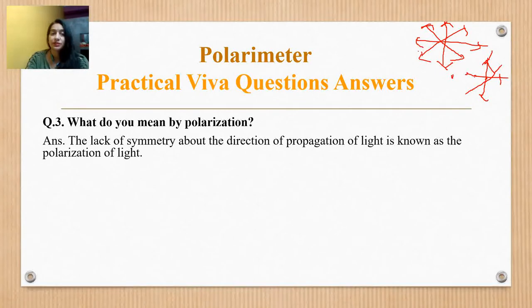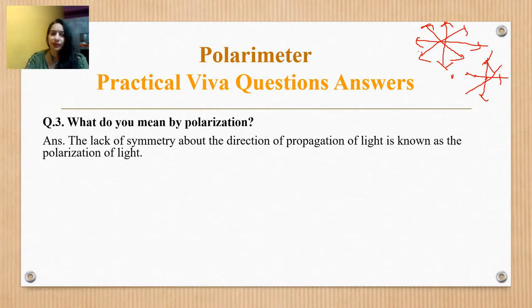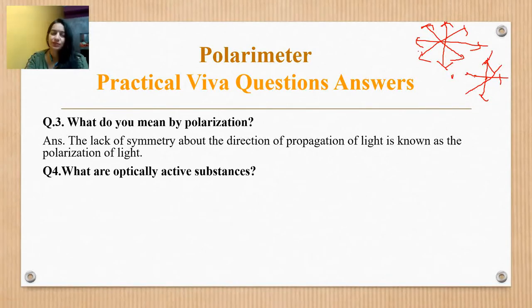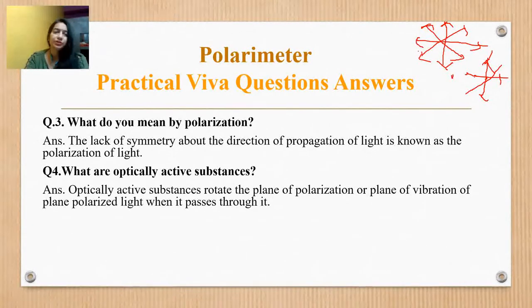What do you mean by an optically active substance? An optically active substance rotates the plane of polarization and the plane of vibration of a plane polarized light when it passes through the substance. The next question is: what are the different optically active substances?